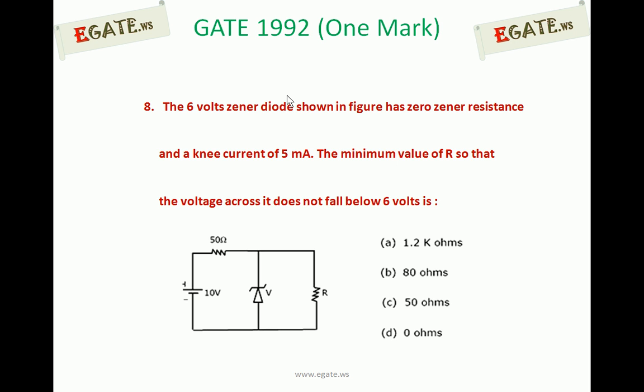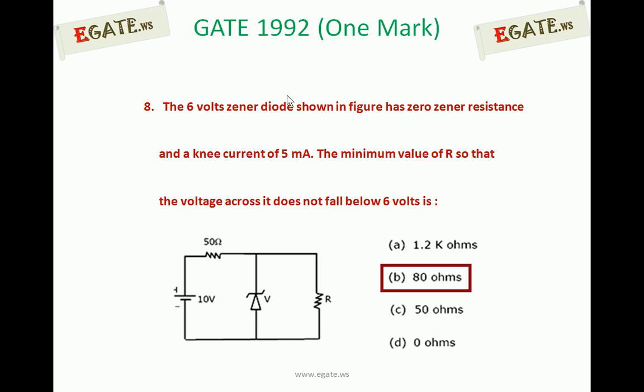We need to calculate the minimum value of R such that it acts as a good voltage regulator so that output voltage will not fall below 6V. The correct option for this one is 80Ω, option B. We see the details now.